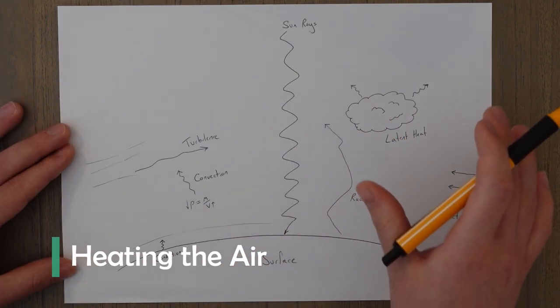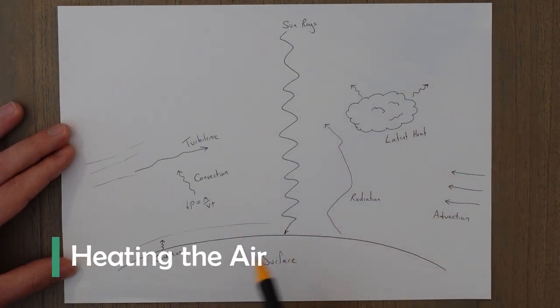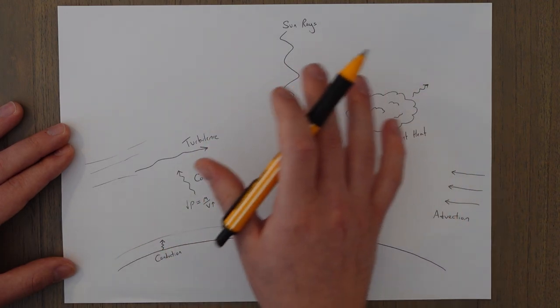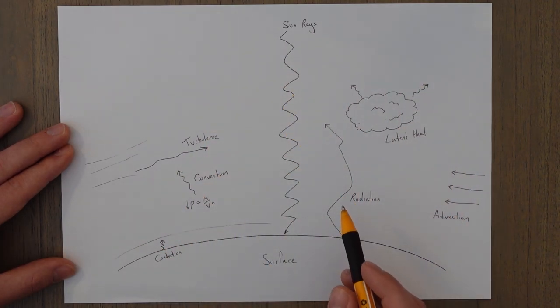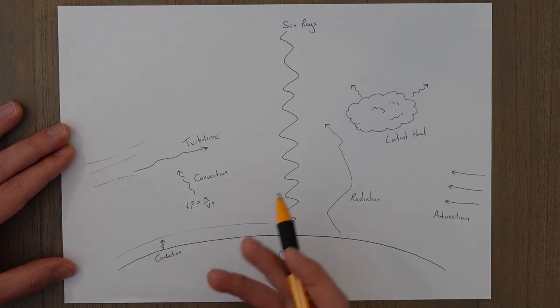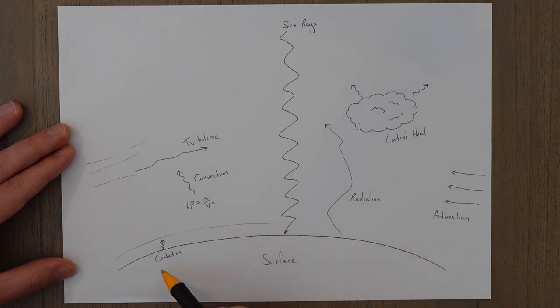After the sun has finished heating up the surface, the surface then heats up the air above it. The first way it does this is known as conduction. This is heat through contact. This is basically where the air directly above the surface is heated. It's only a very shallow layer.